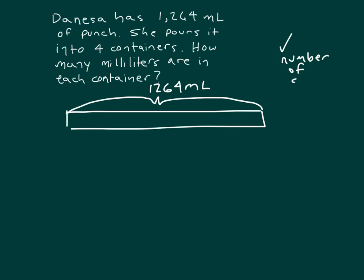Since we know the number of groups is 4, we can take this tape diagram and divide it into those 4 containers. We just need to figure out how much is in each of those containers, and we know there's going to be the same amount there. Let's write out a focused answer. There are blank milliliters of punch in each container.